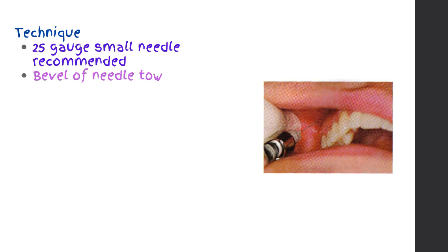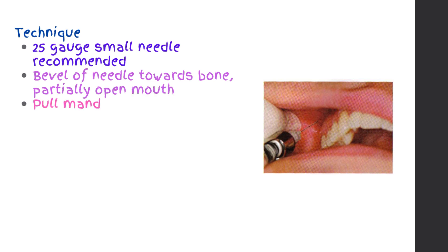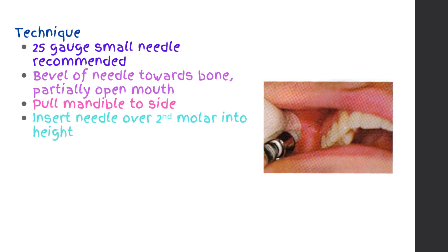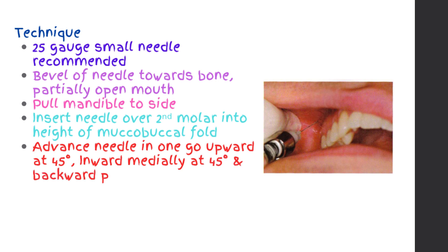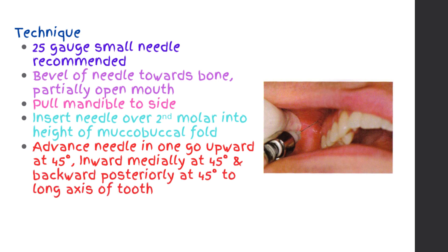Technique continued: bevel of needle towards bone, partially open mouth, pull mandible to side. Insert needle over the second molar into the height of the muco-buccal fold. Advance needle in one go — upward at 45 degrees, inward medially at 45 degrees, and backward posteriorly at 45 degrees to the long axis of the tooth.